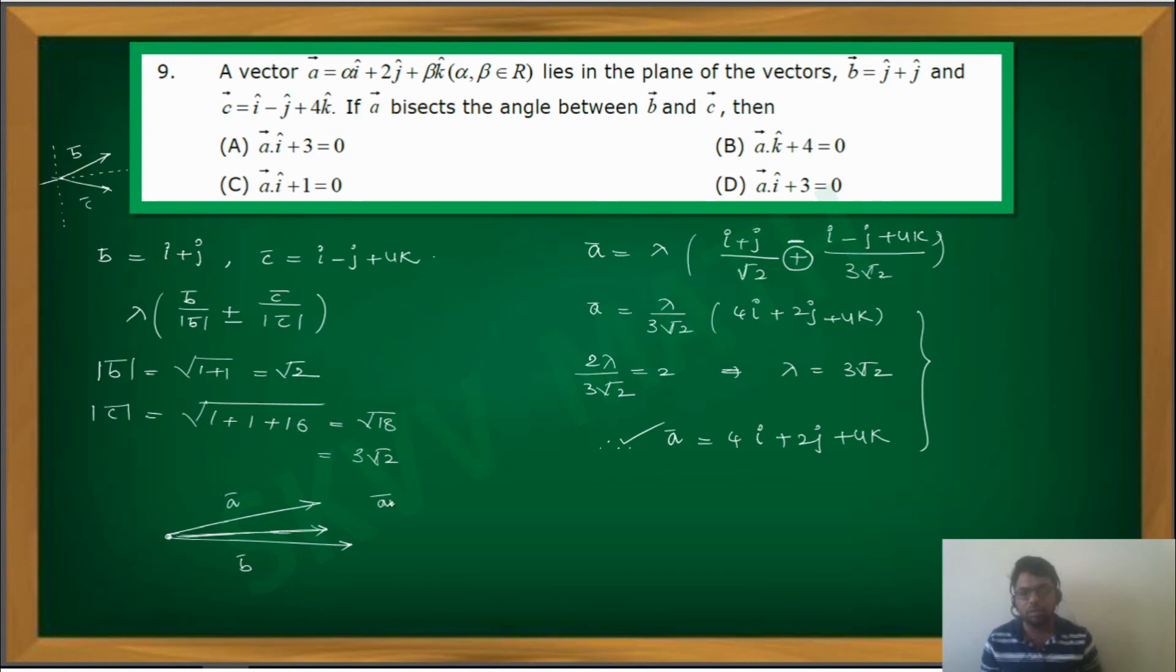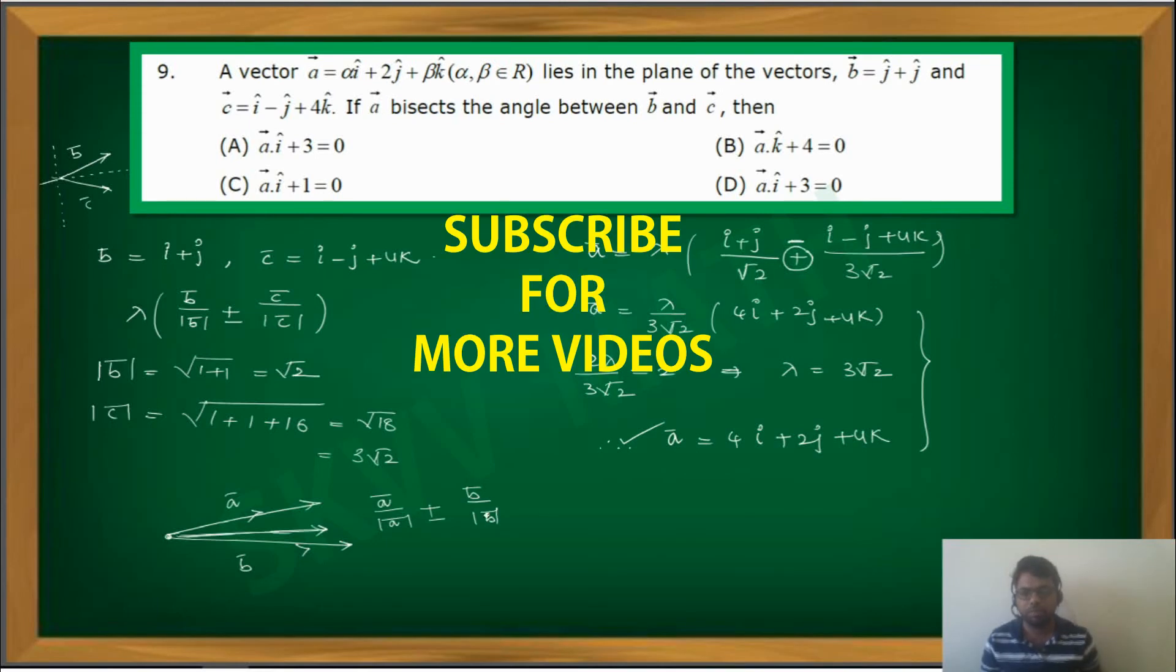You have to make unit vectors first. In this direction, unit vector and in this direction, unit vector, that is b bar by mod b bar. If you add, you will get angular bisectors, and if you subtract, one is internal angular bisector, the other is external angular bisector. This is the concept.